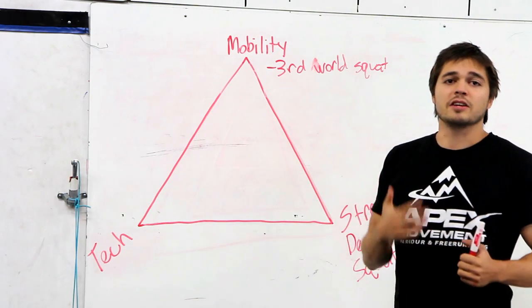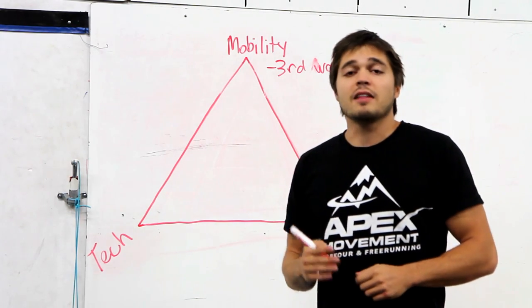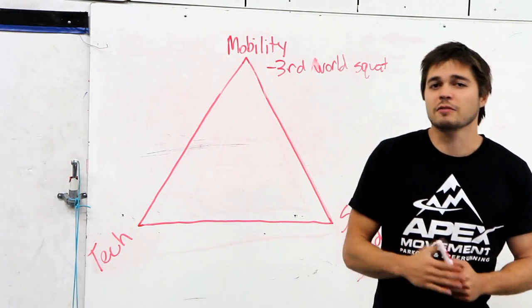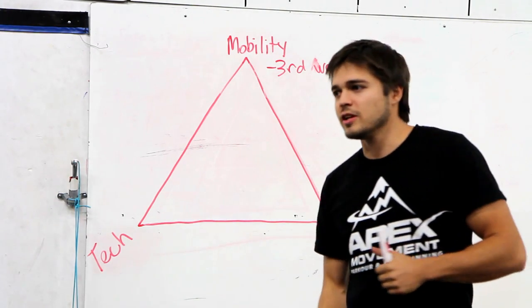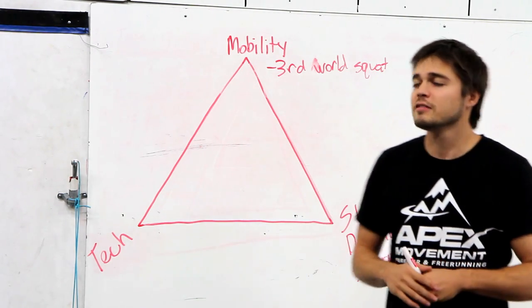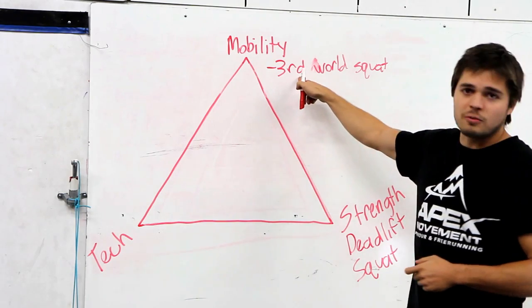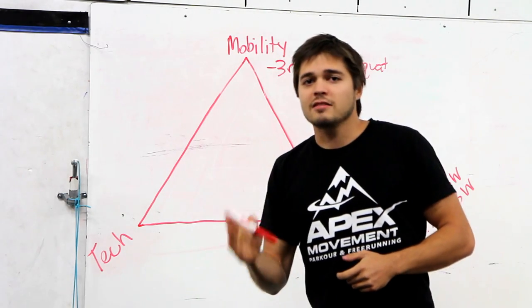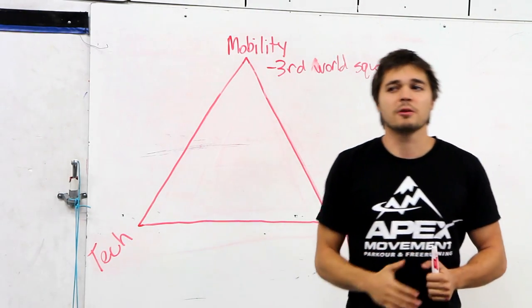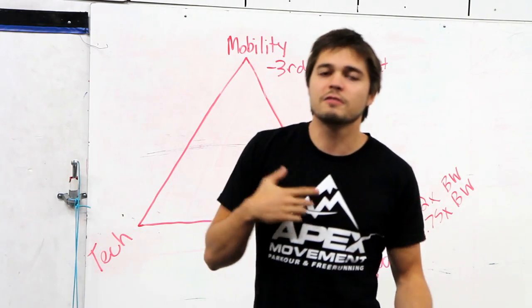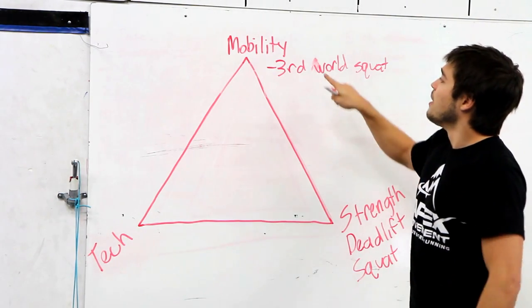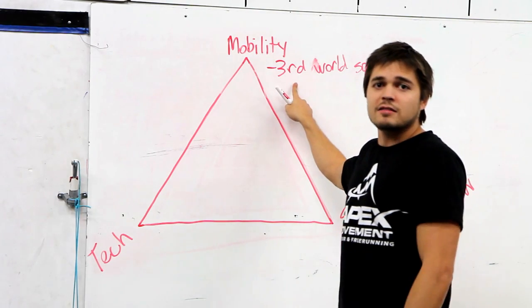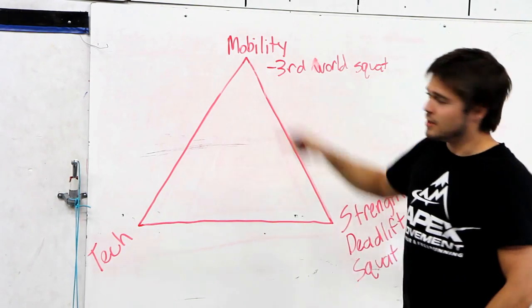This is going to apply to good landings. A lot of the best jumpers and landers for precisions and things like that locally, we're talking like Christian Green, Dylan Baker, Brandon Douglas, they have great third world squats. I have not tested these people, but I would also assume people like Max Henry, Kai Willis, Phil Doyle, Daniel Abaka. These people who have great precision jumps probably have great biomechanics and flexibility and mobility in this position.